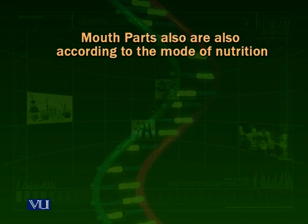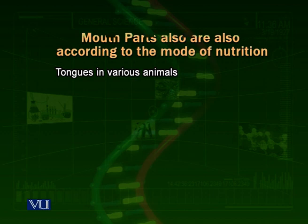Mouth parts are very important according to the mode of nutrition. The frog, for example, has a very long tongue that is inverted — attached at the base and going inside out. It is also sticky because frogs capture insects. To capture insects, they need a long sticky tongue. When they throw their tongue at an insect, it sticks to it and they take it back.